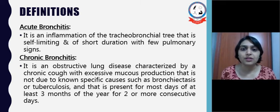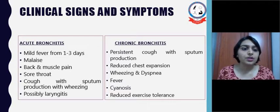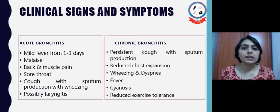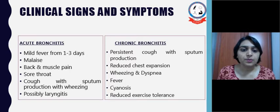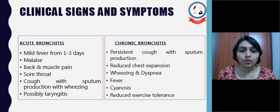The history of the patient takes a very important part in knowing which kind of obstructive lung disease the patient is having. In acute bronchitis, the patient may have mild fever for 1 to 3 days, malaise, back and muscle pain, sore throat, cough with sputum production with wheezing, and possibly laryngitis. In chronic bronchitis, there may be persistent cough with sputum production, reduced chest expansion, wheezing and dyspnea, fever, sinuses, and reduced exercise tolerance.